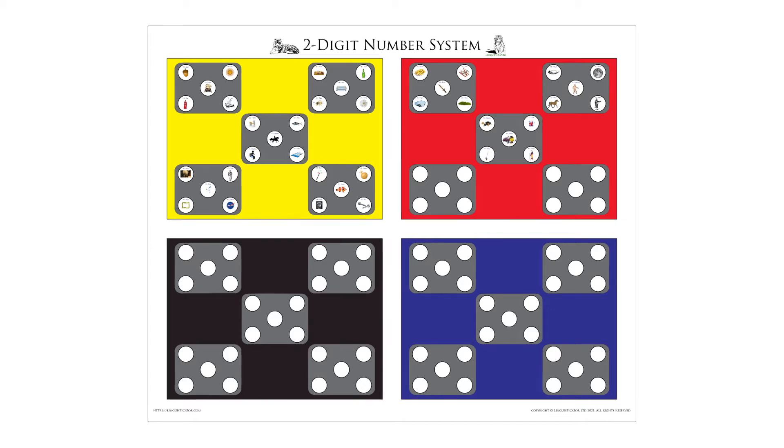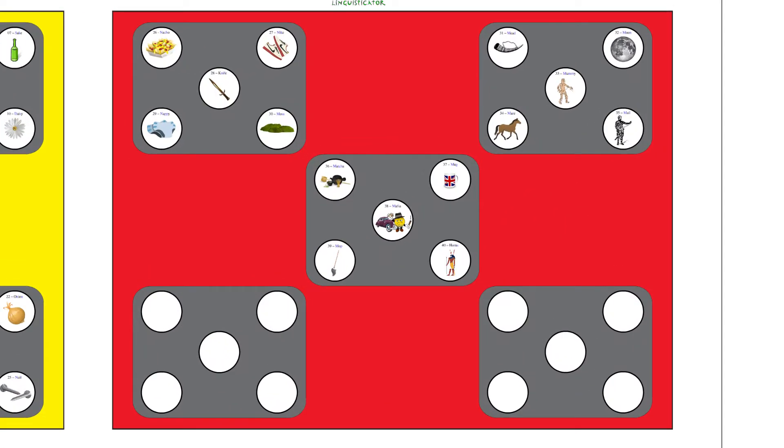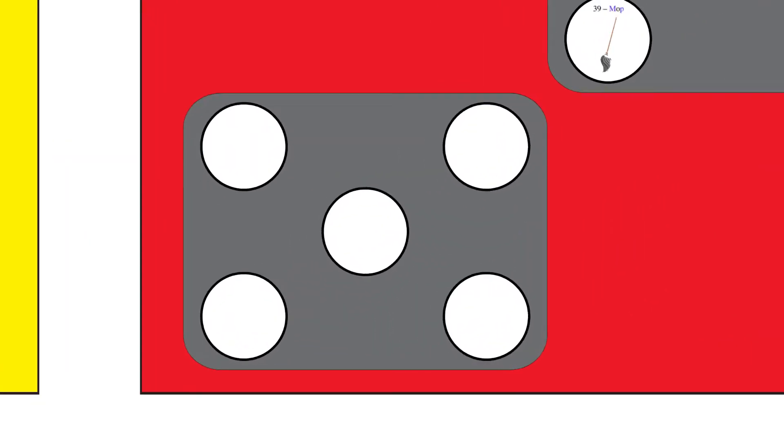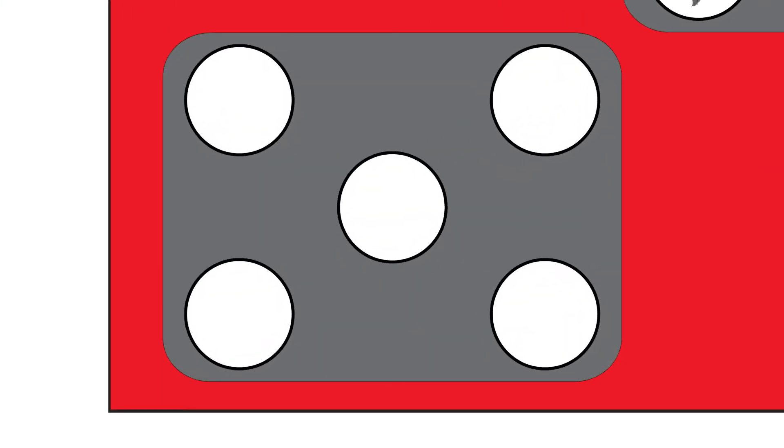Let's continue building our two-digit number system with the number pairs 41 to 50. There are links in the description below to the other videos in this series, as well as to our complete course in memory over at Linguisticator.com.